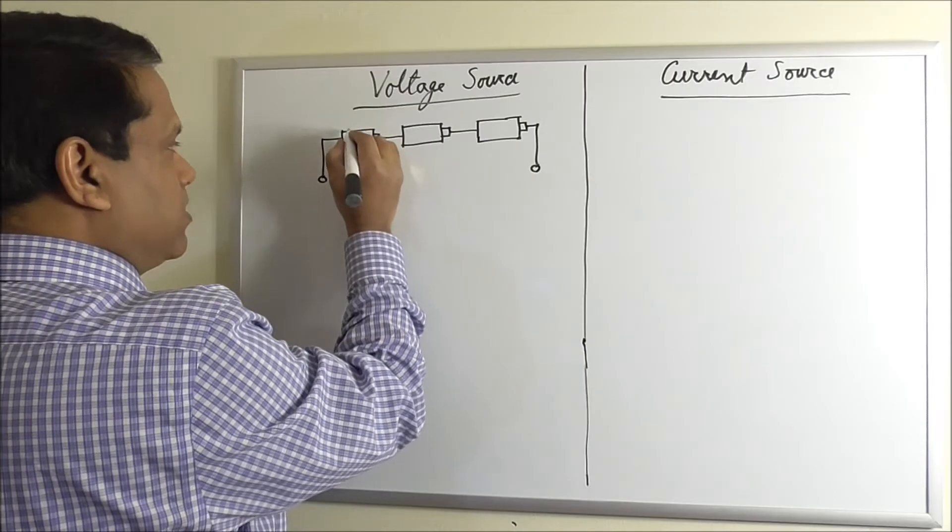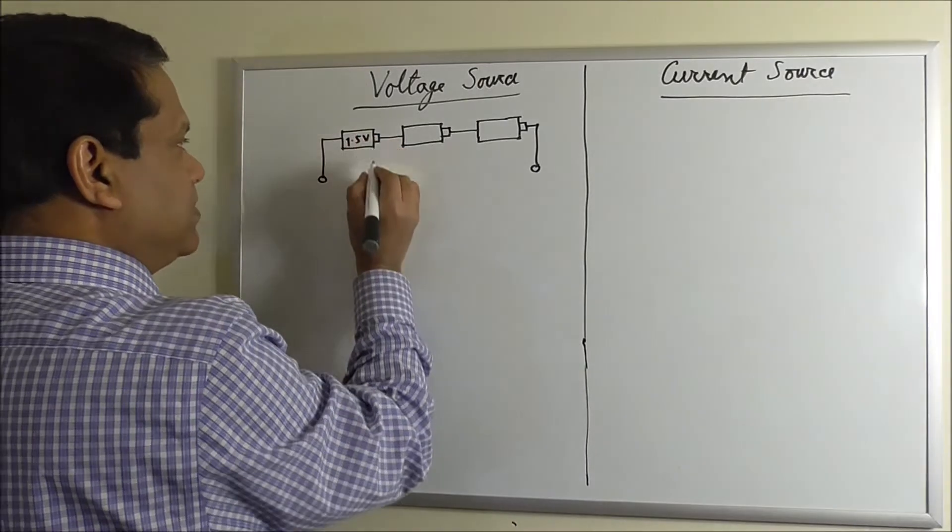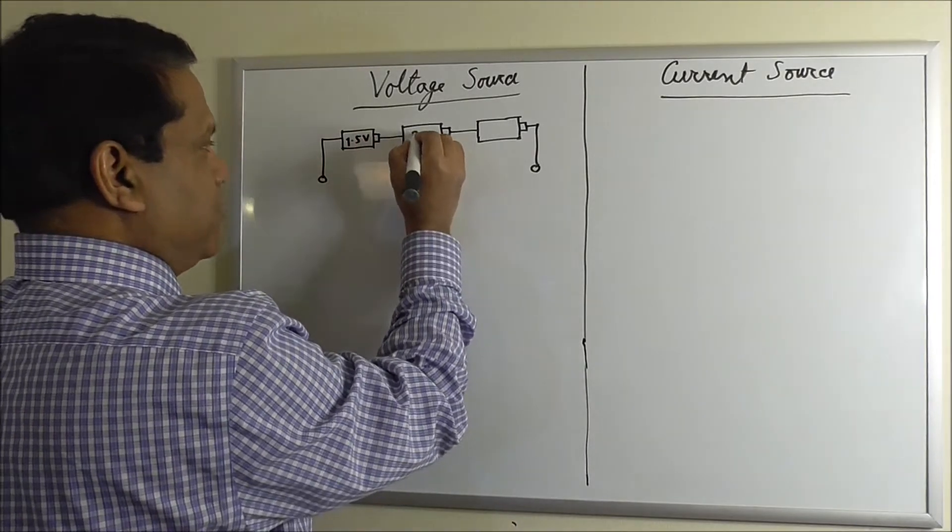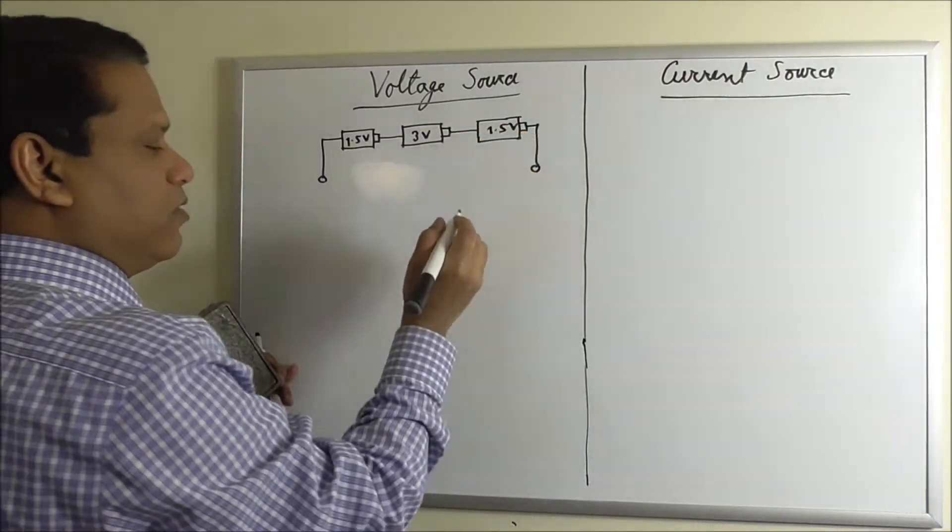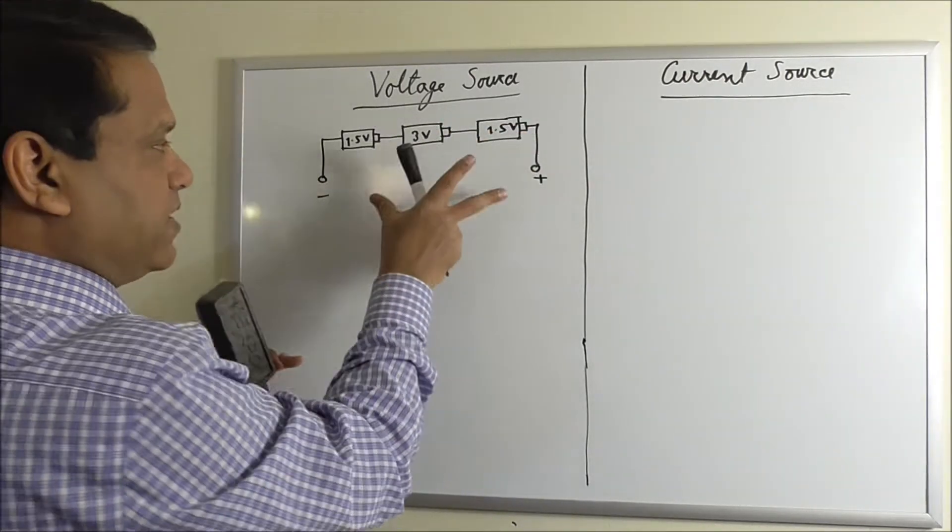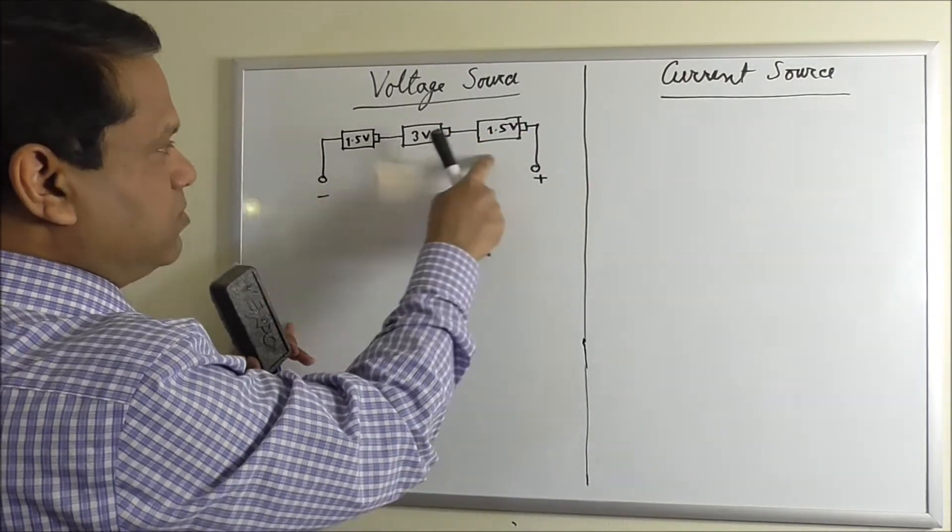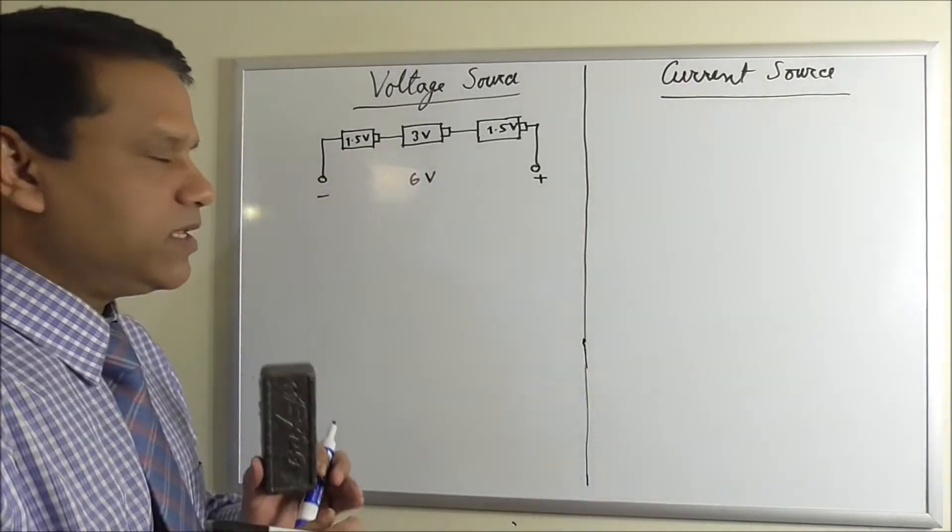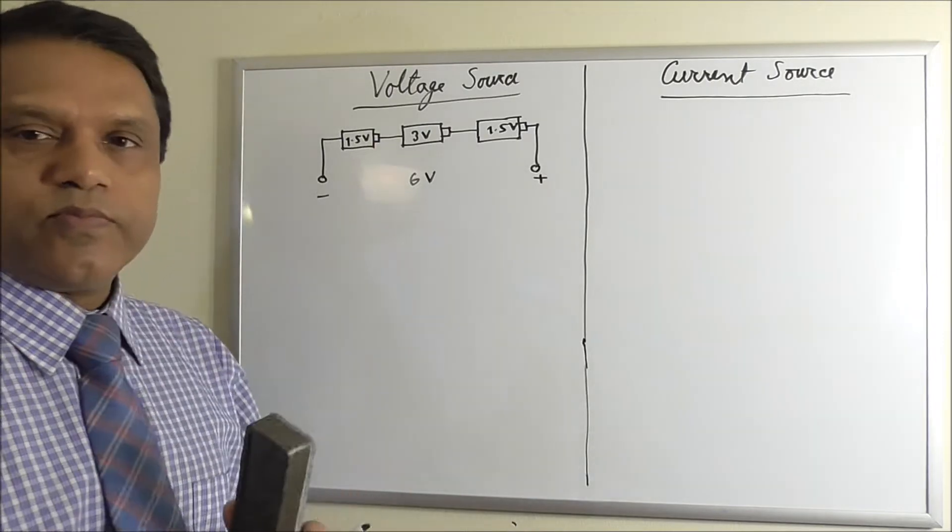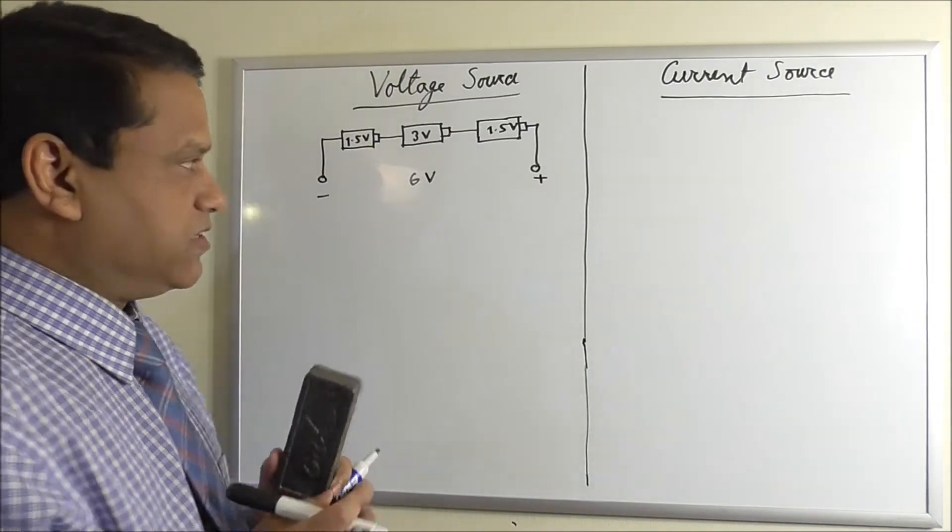Another battery. This battery voltage is 1.5 volt, this is suppose 3 volt, and this is 1.5 volt. So if you apply KVL you can find the total battery voltage here which will be sum of the three voltages, 6 volt. We usually put the same voltage batteries in series, not two different voltages like this.